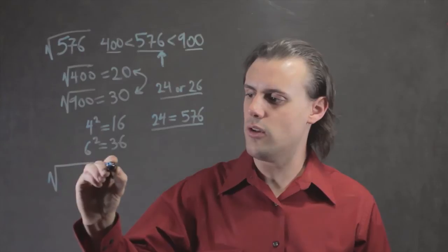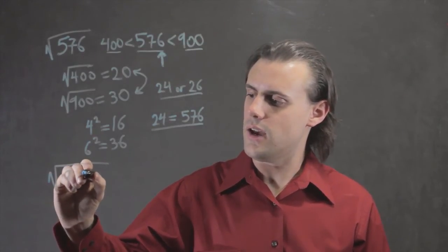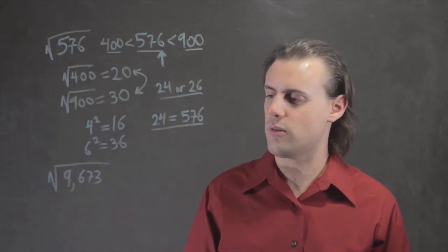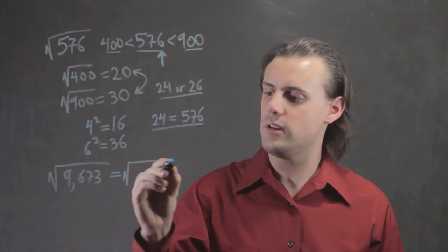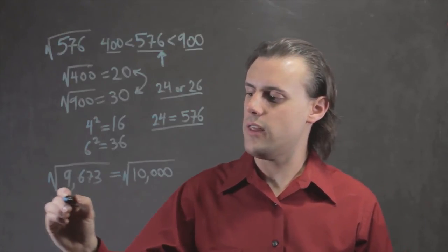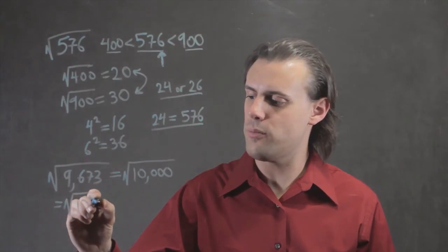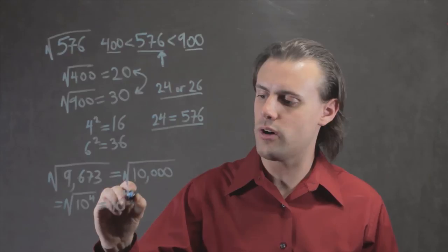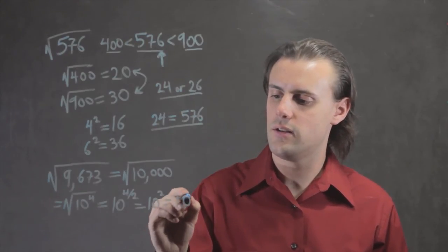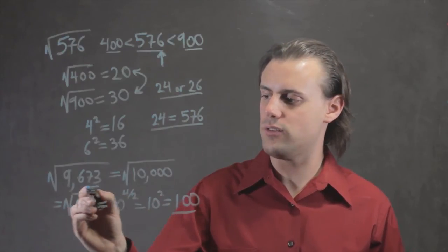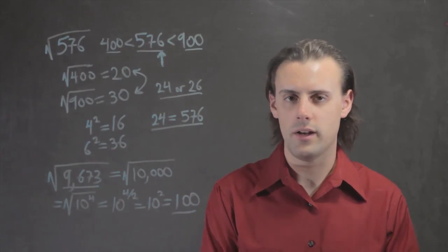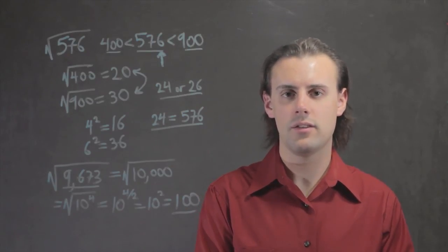Alternatively, if you have a large number like 9673 and wanted to get an order-of-magnitude estimate for the square root, you can simply round it to the nearest 10,000. You see that this is equal to the square root of 10 raised to the fourth power, so you have 10 to the 4 divided by 2, which is simply 10 to the second power, or 100. This would be an estimation for the square root of a very large number. My name is Walter Unglaub and this is how to estimate square roots with big numbers.